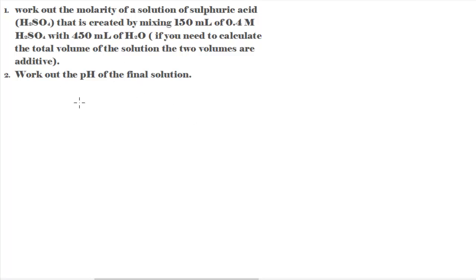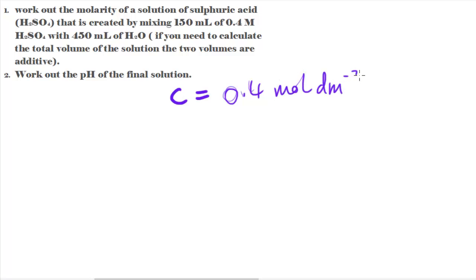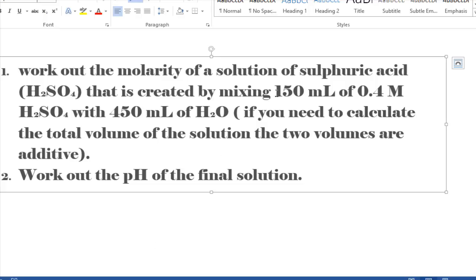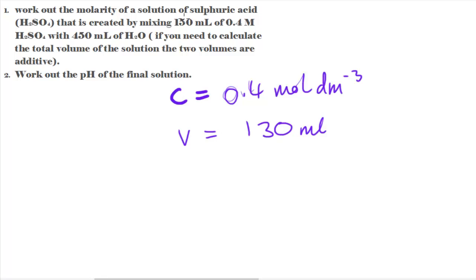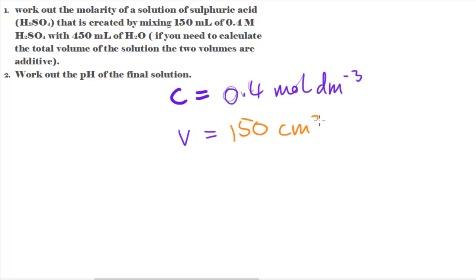The two values I have are the concentration and the volume. The concentration C is equal to 0.4 moles per dm³, and the volume is 150 centimeters cubed. Note that milliliters is basically the same as 1 centimeter cubed, so the volume is 150 cm³.